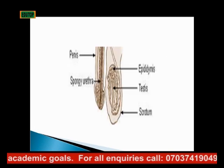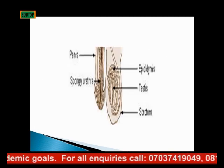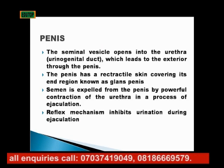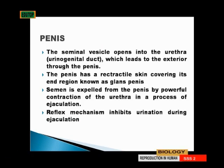The third structure is the penis. The seminal vesicle opens into the urethra. The penis is the medium through which urine comes out — that is, the urethra is connected to it. It also functions as the point where sperm comes out. The urethra leads to the exterior through the penis.